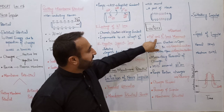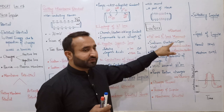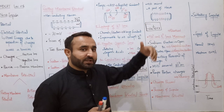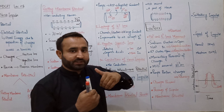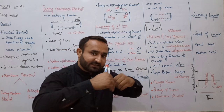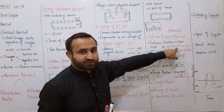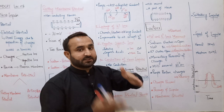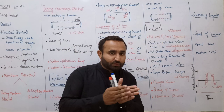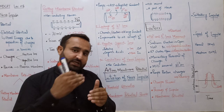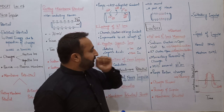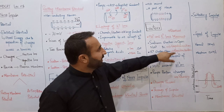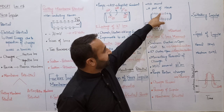Sodium and potassium movement: جب sodium gates open ہوں گے تو facilitated diffusion سے passive transport ہوگی - sodium باہر سے in آئیں گے۔ جب sodium in آئیں گے تو depolarization ہو جائے گی - positive negative charges کا difference ختم ہو جائے گا، poles ختم ہو جائیں گے، no positive outer، no negative inner۔ Depolarization کے ساتھ ہی potassium gates بھی open ہوں گے۔